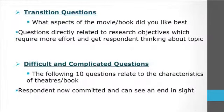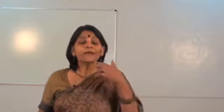Transition questions, such as 'What aspects of the movie or book did you like best?', lead into questions directly related to research objectives, which require more effort and get the respondent thinking about the topic. For difficult and complicated questions — for example, the following 10 questions relating to characteristics of the theater, movie, or book — once respondents are told how many questions remain, they feel committed and can see an end in sight, making them more likely to complete the questionnaire.